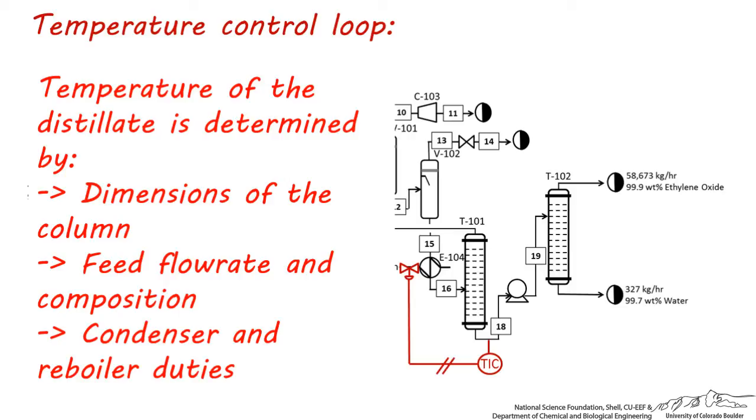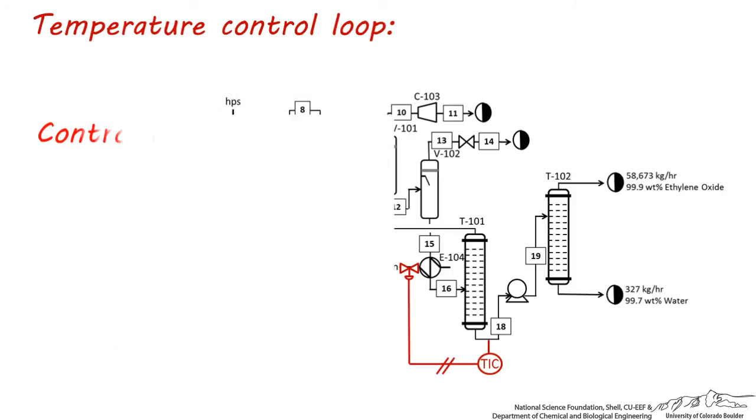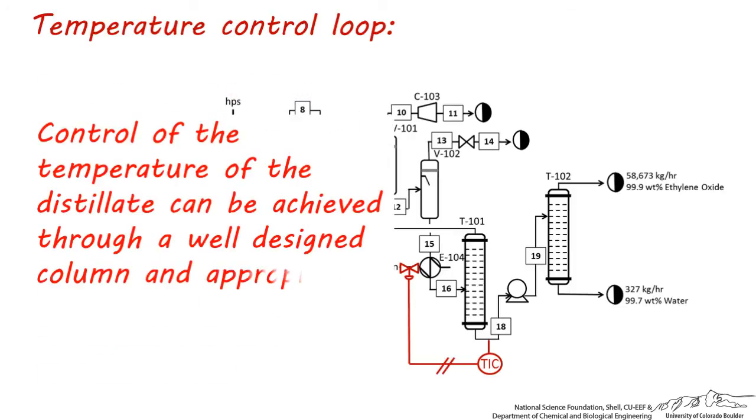Also, this control loop is receiving its signal from the reboiler, which is excellent for reboiler control, but it doesn't help control the distillate temperature directly. So not even this shorter control loop is the best option. It's best to have a well-designed column with an appropriately sized condenser.